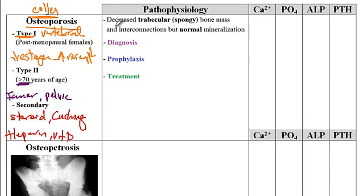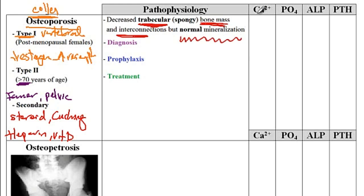In patients with osteoporosis, the bone disorder usually affects the trabecular or spongy bone, and there is a decrease in bone mass as well as interconnections. However, the mineralization of the bones is normal. Therefore, the levels of calcium, phosphate, alkaline phosphatase, and parathyroid hormone all remain normal. The level of mineralization is normal in patients with osteoporosis.